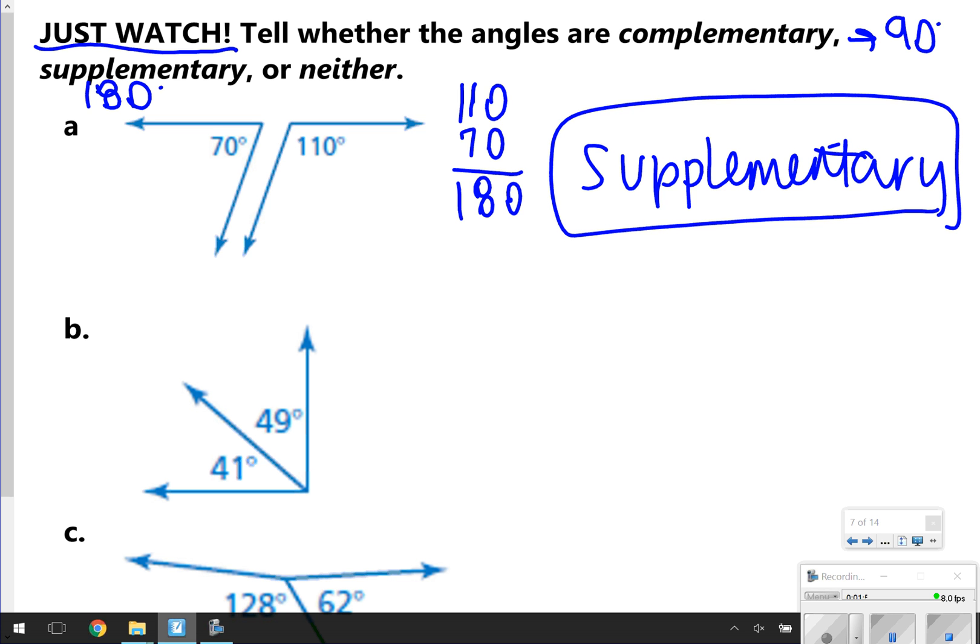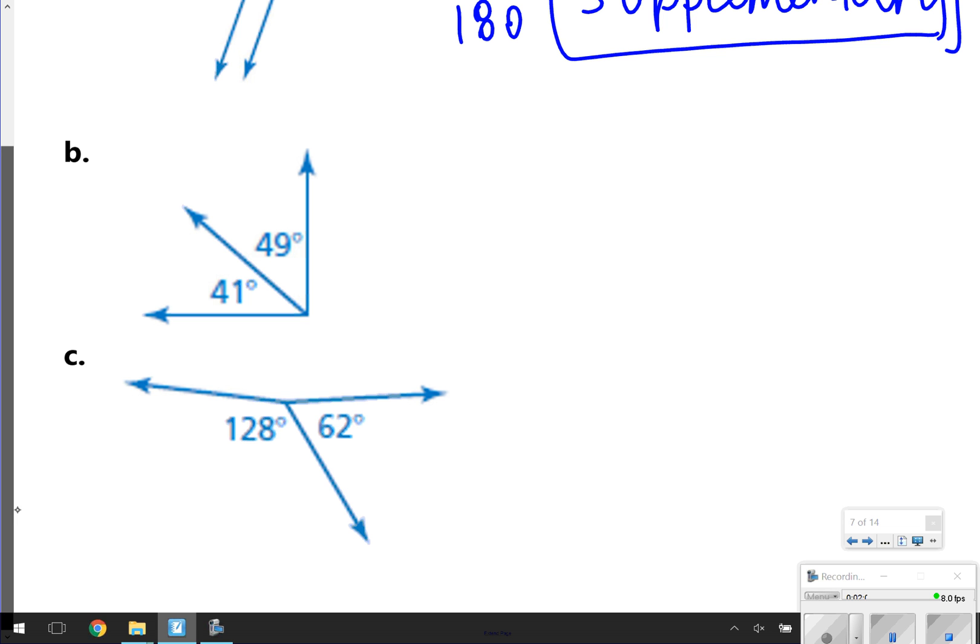For letter B, I have a 41 and a 49 degree angle. If I add these two together, I get 90 degrees. This means it's going to be a Complementary Angle.